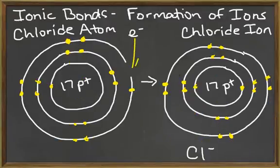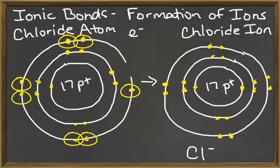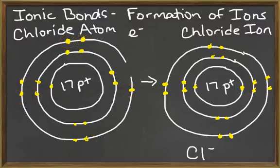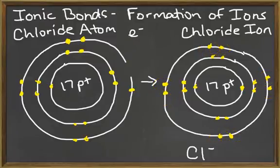If an atom gains a negatively charged electron, it will become more negative. This negatively charged ion is now called an anion. For example, a chlorine atom has seven electrons in its outermost energy level. Rather than give up all seven electrons to become stable, it is more likely to gain an electron to become stable with eight electrons in its outermost shell. By gaining an electron that carries a negative charge, chlorine will become more negative, and be called a chloride ion.